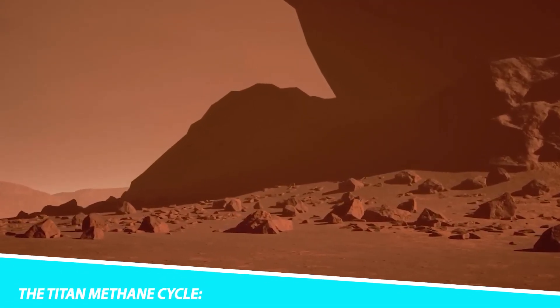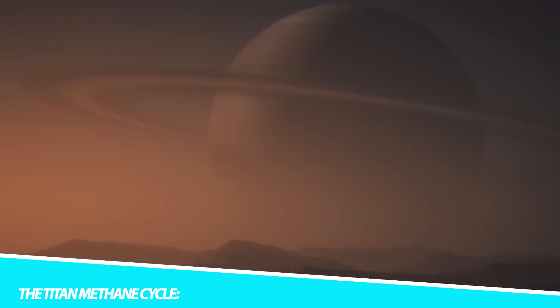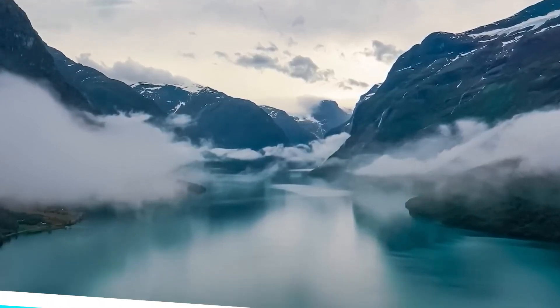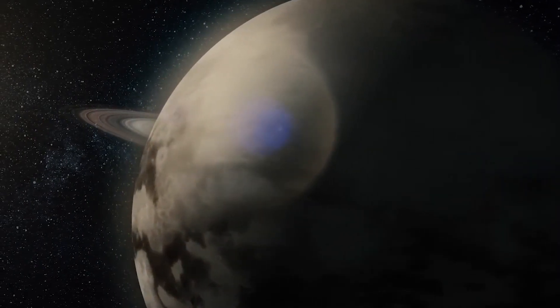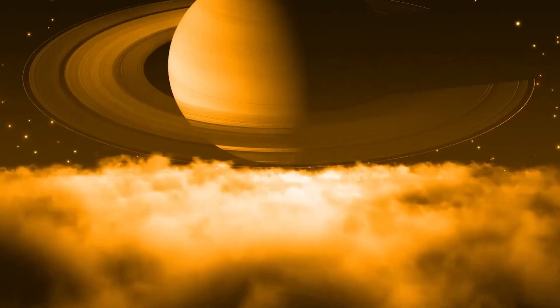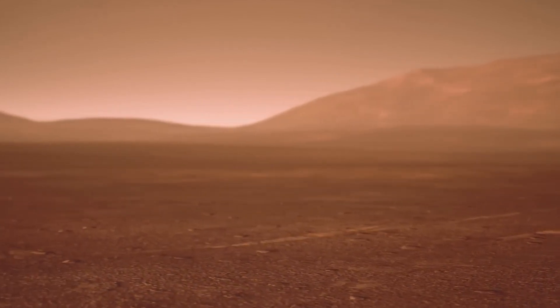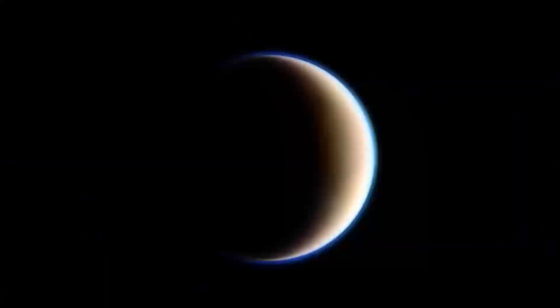The presence of these liquid methane and ethane lakes unveils a captivating facet of Titan's environment, a methane cycle that bears semblance to Earth's water cycle. On Titan, methane and ethane evaporate from the lakes, rise into the atmosphere, and subsequently condense into clouds. These clouds release methane rain, replenishing the lakes, thus perpetuating this alien cycle. This uncanny parallel to Earth's hydrological processes prompts scientists to explore the possibility of life existing within this intricate system.